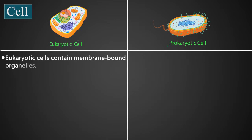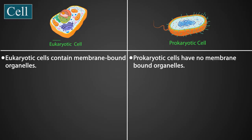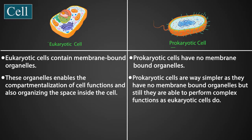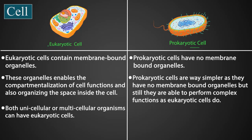Eukaryotic cells contain membrane-bound organelles, whereas prokaryotic cells have no membrane-bound organelles. These organelles enable the compartmentalization of cell functions and also organize the space inside the cell. Prokaryotic cells are way simpler, as they have no membrane-bound organelles, but they are still able to perform complex functions like eukaryotic cells do.